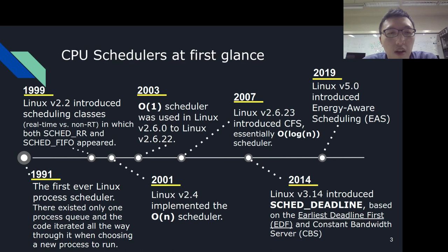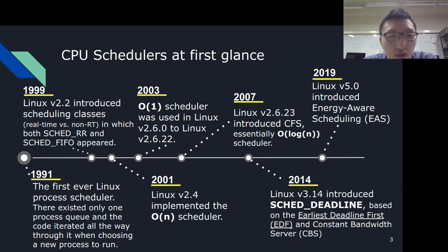In 2007, the Completely Fair Scheduler was introduced, which is essentially the O(log N) scheduler. Moving forward to 2014, Linux 3.14 introduced the SCHED_DEADLINE scheduler, which is based on the Earliest Deadline First scheduling algorithm and the constant bandwidth server. Five years later, Energy-Aware Scheduling was introduced in Linux version 5.0. This is the full timeline of the CPU schedulers.